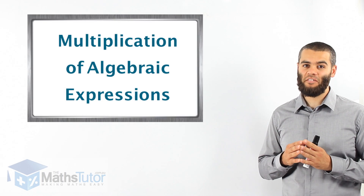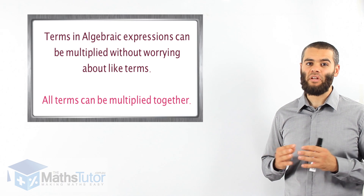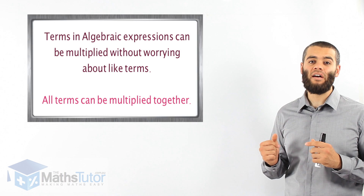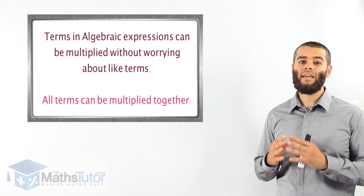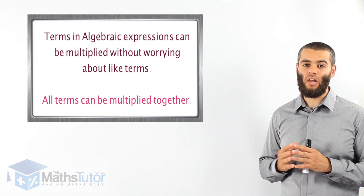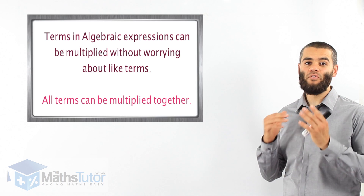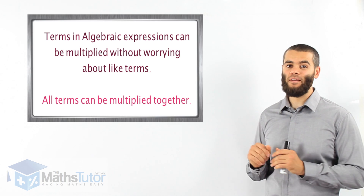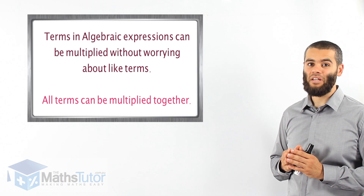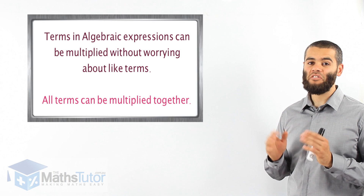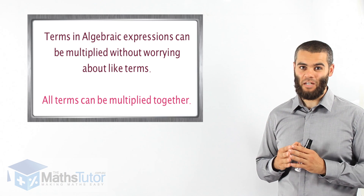Multiplication of algebraic expressions. In algebra we can multiply algebraic expressions and terms together no matter what pronumerals they have. Unlike addition and subtraction where we have to look for like terms, with multiplication we can multiply everything together — it doesn't really matter. Let's go through some examples to see how easy it is. You're going to notice it's very straightforward, as long as you know your times tables.